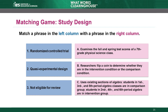The second item in the left column is Quasi-Experimental Design. We're left with choice A or C as options. The answer is C: uses existing sections of algebra. Students in first, third, and fifth period algebra classes are in the comparison group. Students in second, fourth, and sixth period algebra are in the intervention group. There are two distinct groups, and the study does not use random assignment, which means this is an eligible Quasi-Experimental Design.